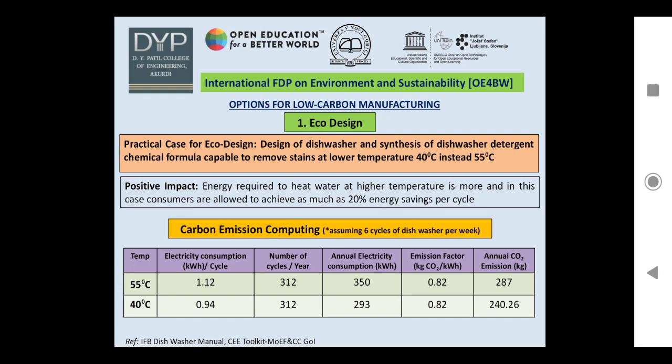A practical case for eco design is the design of a dishwasher and the synthesis of a dishwasher detergent chemical formula capable of removing stains at a lower temperature of 40°C instead of 55°C. The positive impact is that consumers can achieve up to 20% energy savings per cycle due to the reduction in operating temperature. Energy consumption per kilowatt-hour per cycle is 1.12 kWh at 55°C and 0.94 kWh at 40°C.